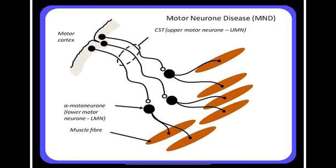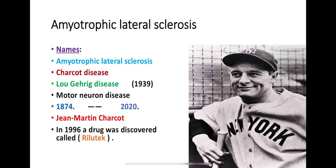It is important to know about ALS — amyotrophic lateral sclerosis. Amyotrophic lateral sclerosis has multiple names: it is also called Lou Gehrig's disease, and motor neuron disease. All these names refer to the same condition.